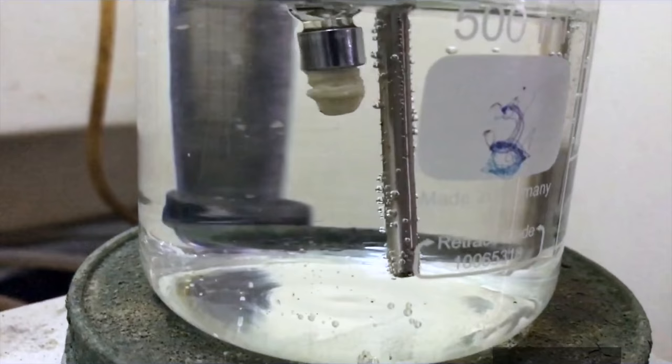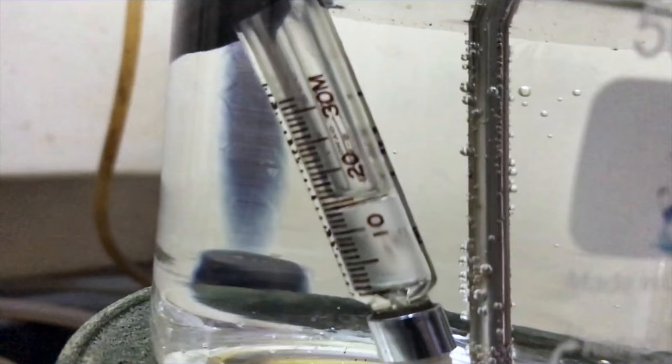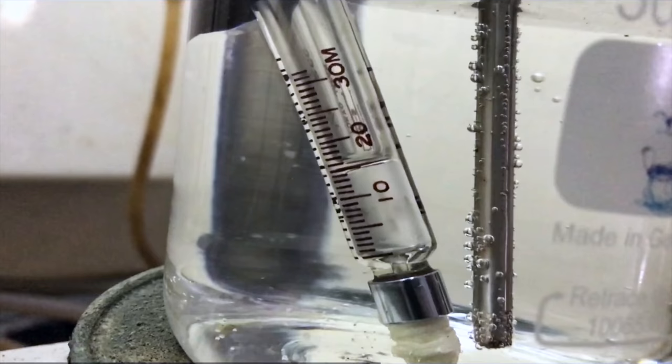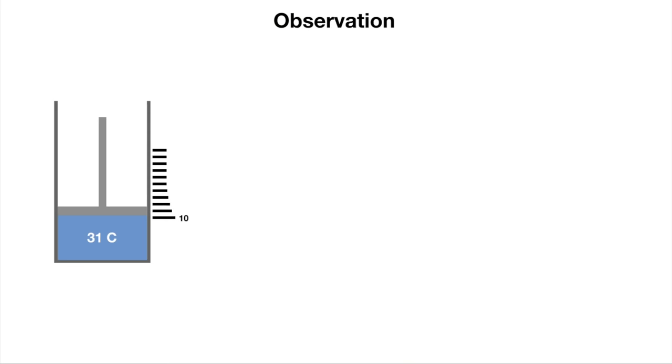Now you could see that it actually moves from 10 ml to 20 ml. From this experiment we could observe that as the syringe is being heated up, the volume increases from 10 ml to 20 ml.